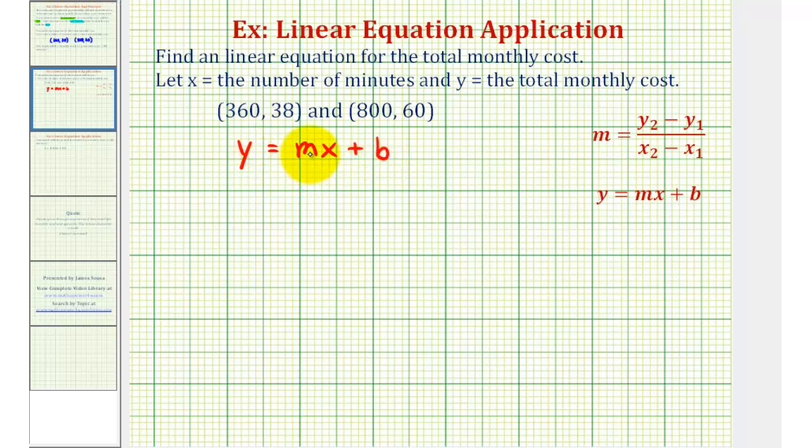So the first step will find m, or the slope, using these two points and our slope formula. So the first ordered pair will use x sub 1, y sub 1, and the second ordered pair will use x sub 2, y sub 2. So our slope is m equals y sub 2 minus y sub 1, or 60 minus 38. This is the change in the monthly cost, divided by x sub 2 minus x sub 1, which is the change in the number of minutes.